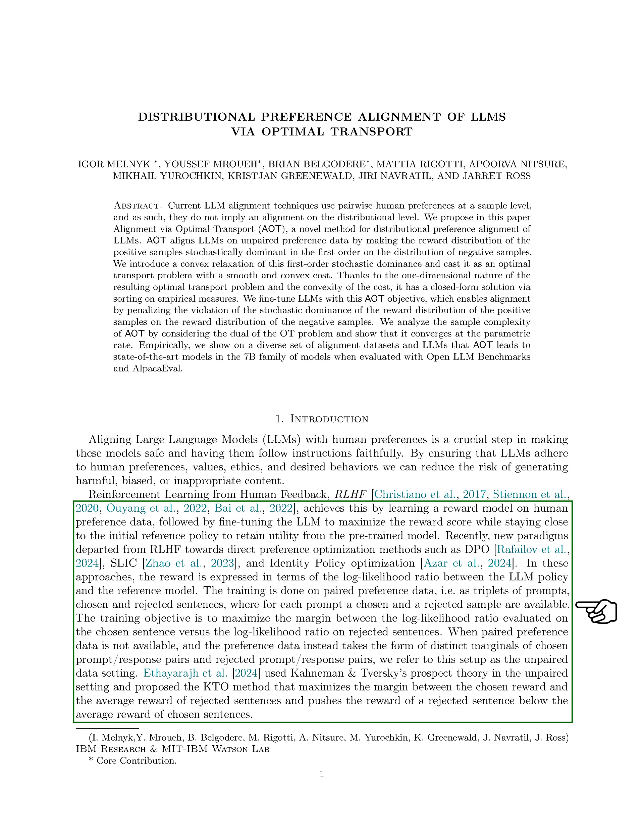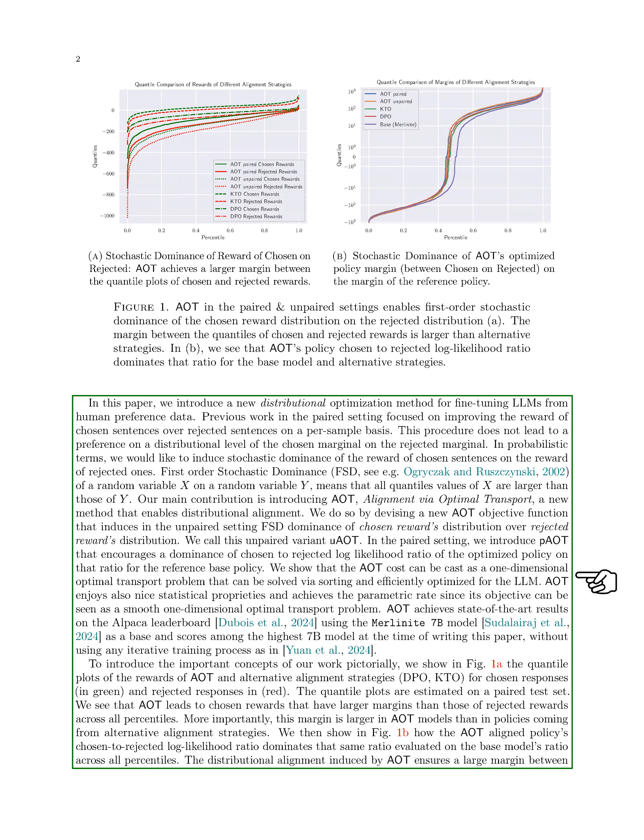In this scenario, we introduced the KTO method, inspired by Kahneman and Tversky's prospect theory, to maximize the margin between chosen and rejected rewards. Our main contribution is the introduction of alignment via optimal transport (AOT), a method that focuses on distributional alignment by inducing stochastic dominance of chosen rewards over rejected ones.